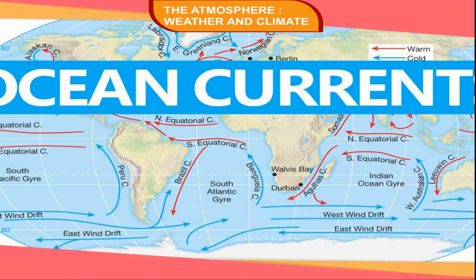Ocean Currents. A stream of water in an ocean flowing in a constant direction is called an ocean current. Ocean currents make a considerable difference in the temperature along coastal regions. Warm ocean currents help to increase the temperature, while cold ocean currents help to decrease the temperature in a coastal region. For example, the cold Labrador Current affects the eastern coast of Canada, keeping it frozen during winter. Similarly, on the western coast of Europe, the warm North Atlantic Drift melts the ice during winter and keeps all ports ice-free throughout the year.